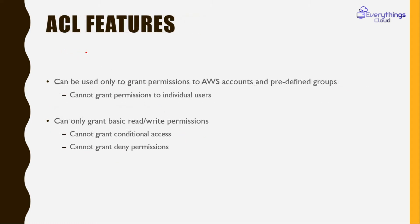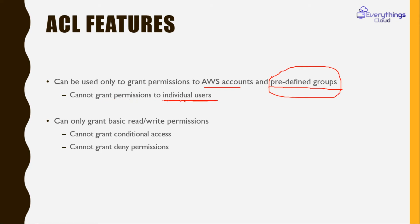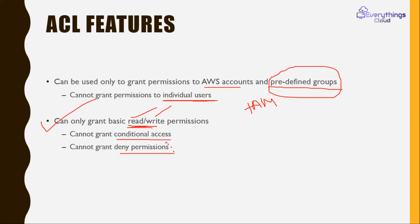You can grant permission to an AWS account and predefined groups — I'll explain what predefined groups are in an upcoming slide. With ACL you cannot grant permission to individual IAM users, unlike IAM policy. By default, ACL has only two basic permissions: read and write. You cannot provide conditional access or deny permissions — you can only give read or write access.